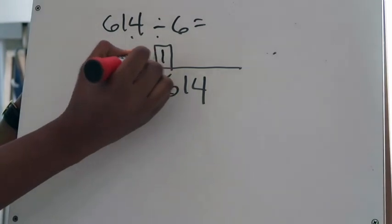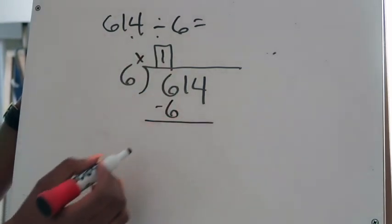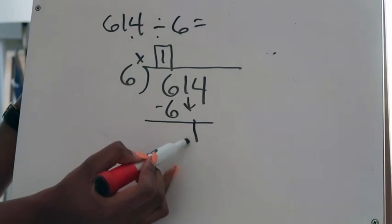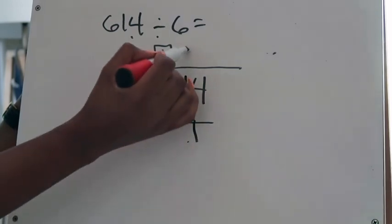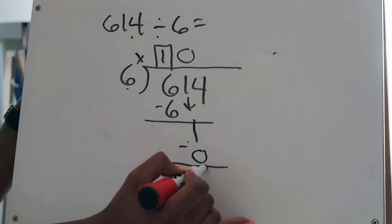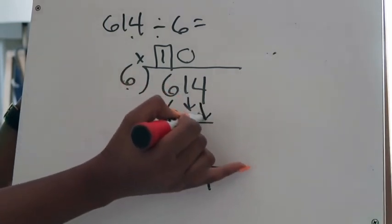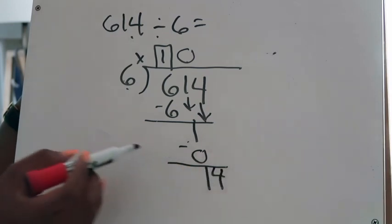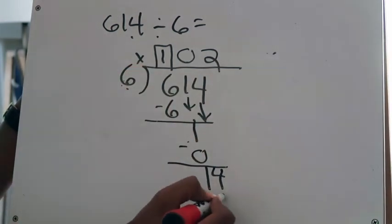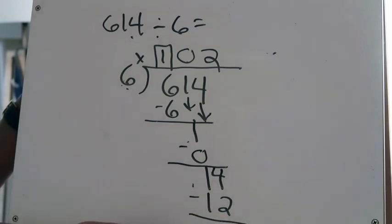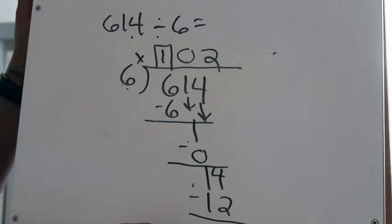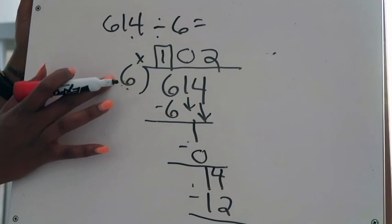I start dividing: 6 can go into 6 one time. 1 times 6 is 6. 6 minus 6 is 0. Bring down the 1. Six cannot go into 1, so I place a 0 there. 0 times 6 is 0. 1 minus 0 is 1. Bring down the 4. Six goes into 14 two times. 2 times 6 is 12. 14 minus 12 is 2. I have a 2 down there and I know it's a remainder because 6 cannot go into 2.